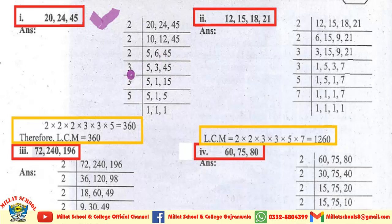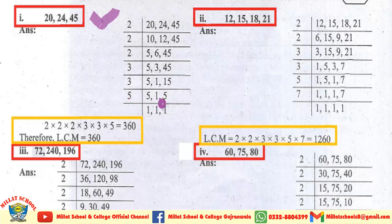Next 3 کے table پر divide کریں گے: 5، 3 کے table میں نہیں آتا تو 5 ویسے ہی لکھیں گے، 3×1=3، 3×1=3، 3×5=15۔ پھر 5 ویسے ہی لکھیں گے، 1 ویسے ہی لکھیں گے، 3×5=15۔ Next ہمارے پاس 5 ہے — 5×1=5، 1 as it is، 5×1=5۔